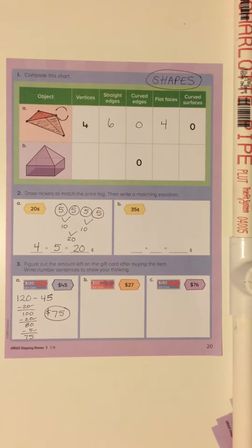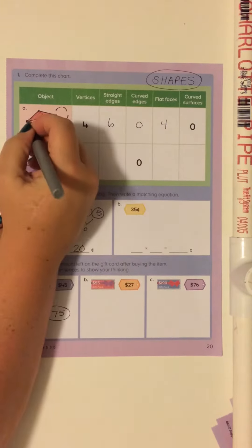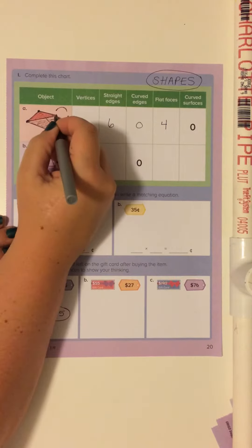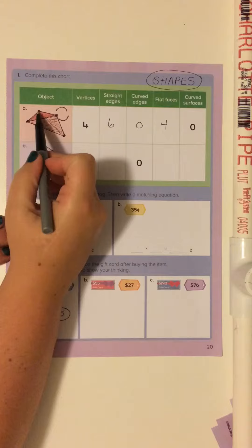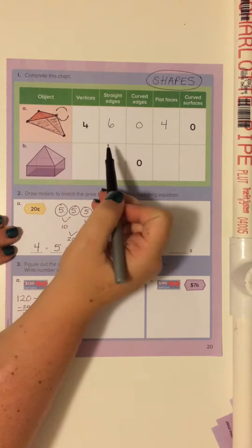On number one it says to complete the chart and we're going based off of the shape here. Vertices are the points where all of the lines meet, and there are four: one, two, three, four for this shape.